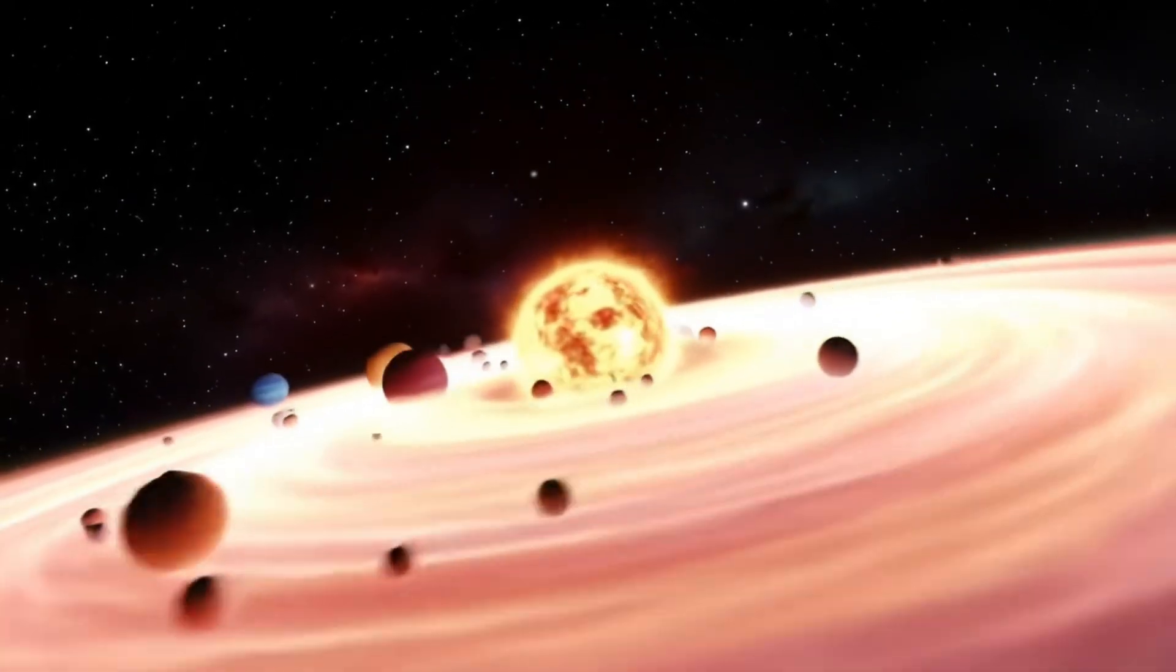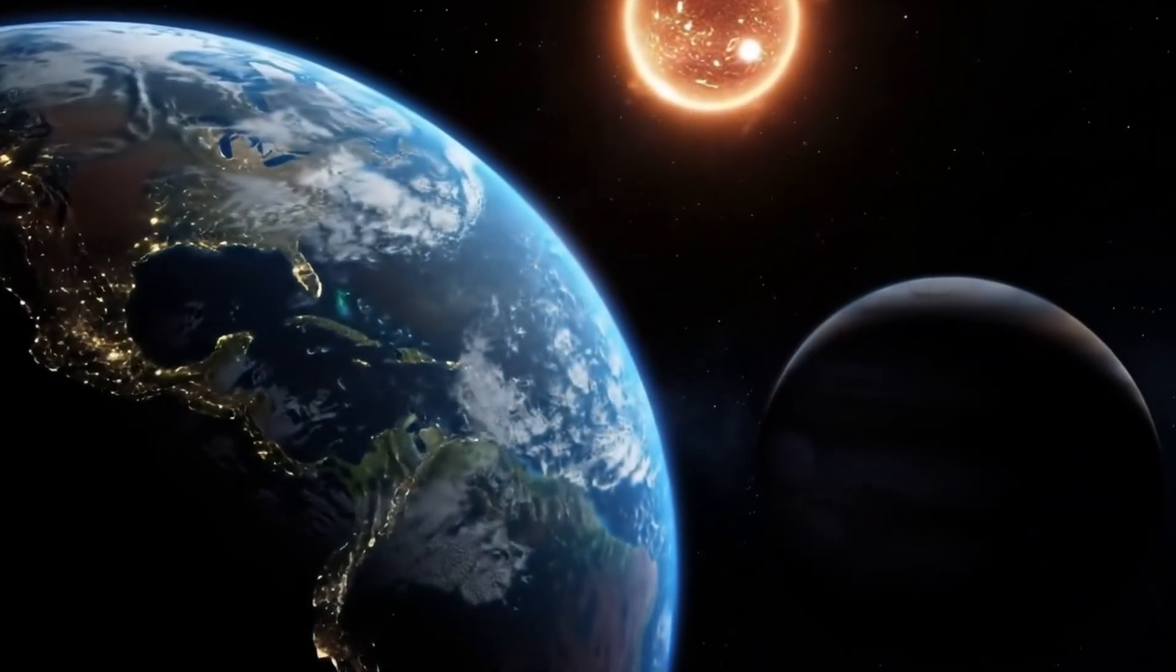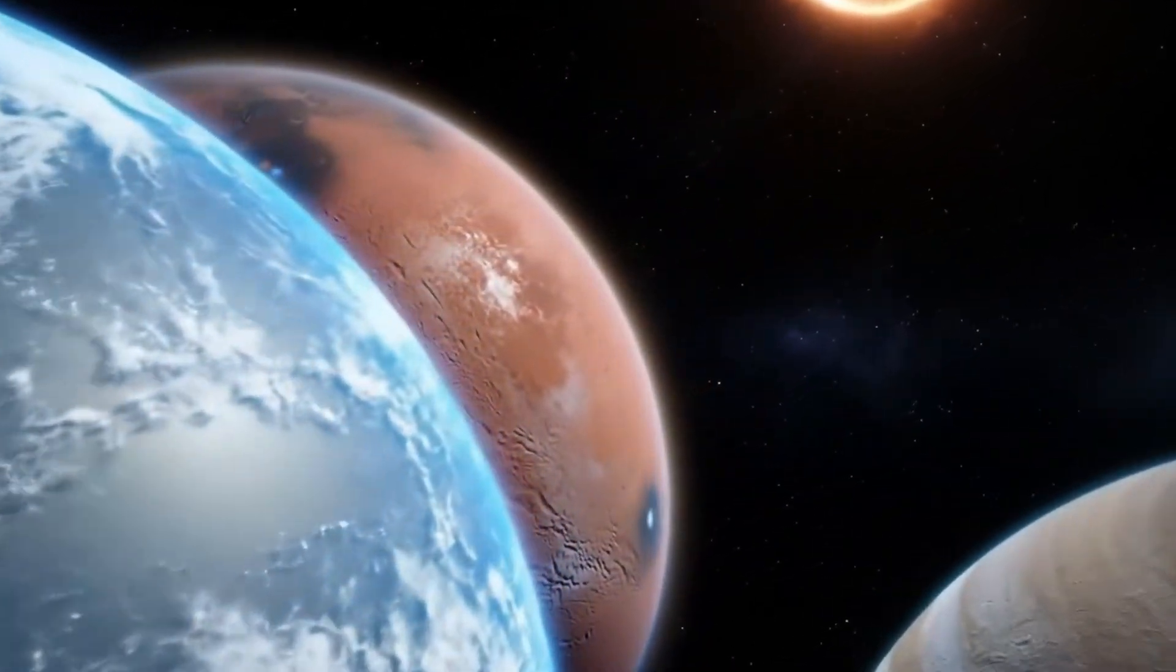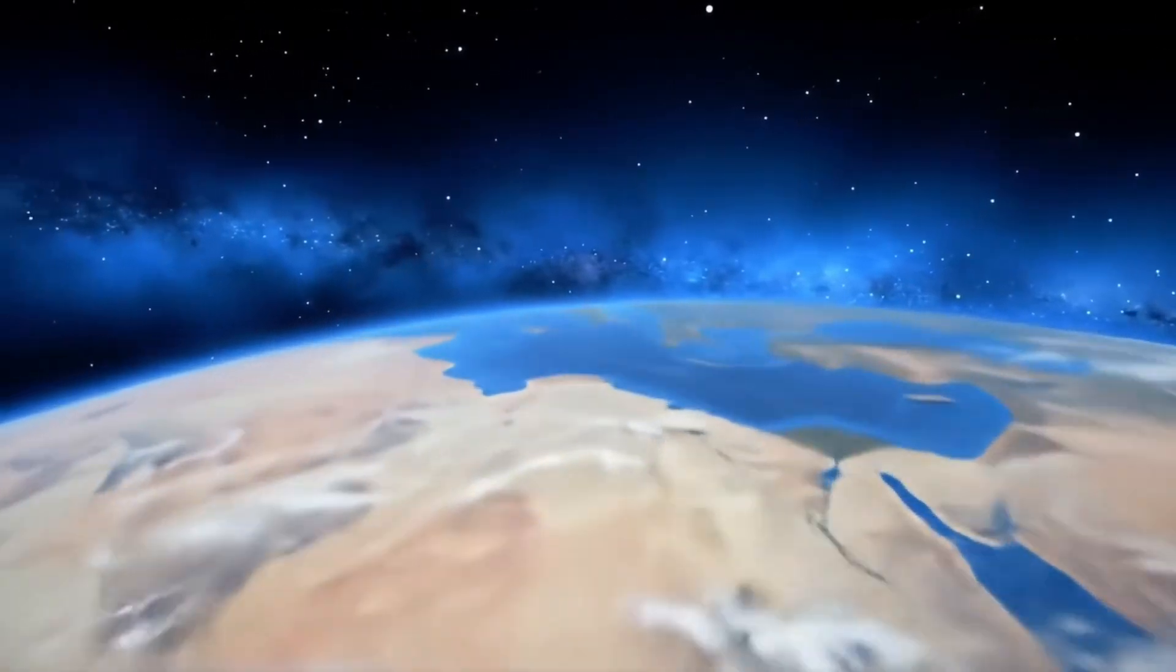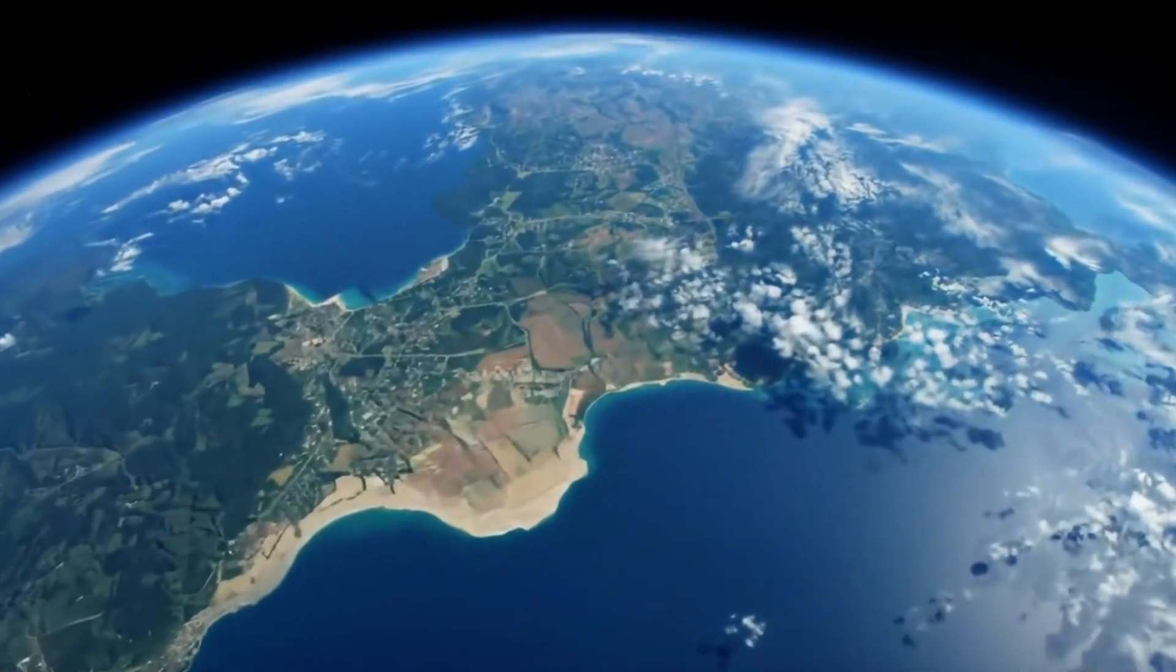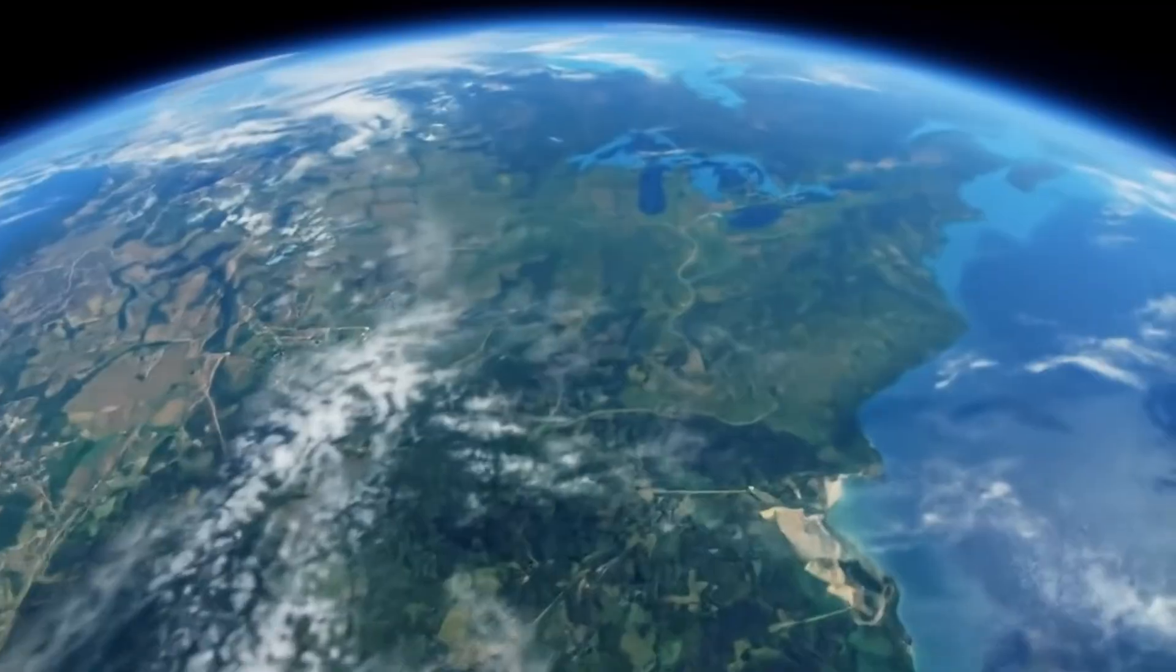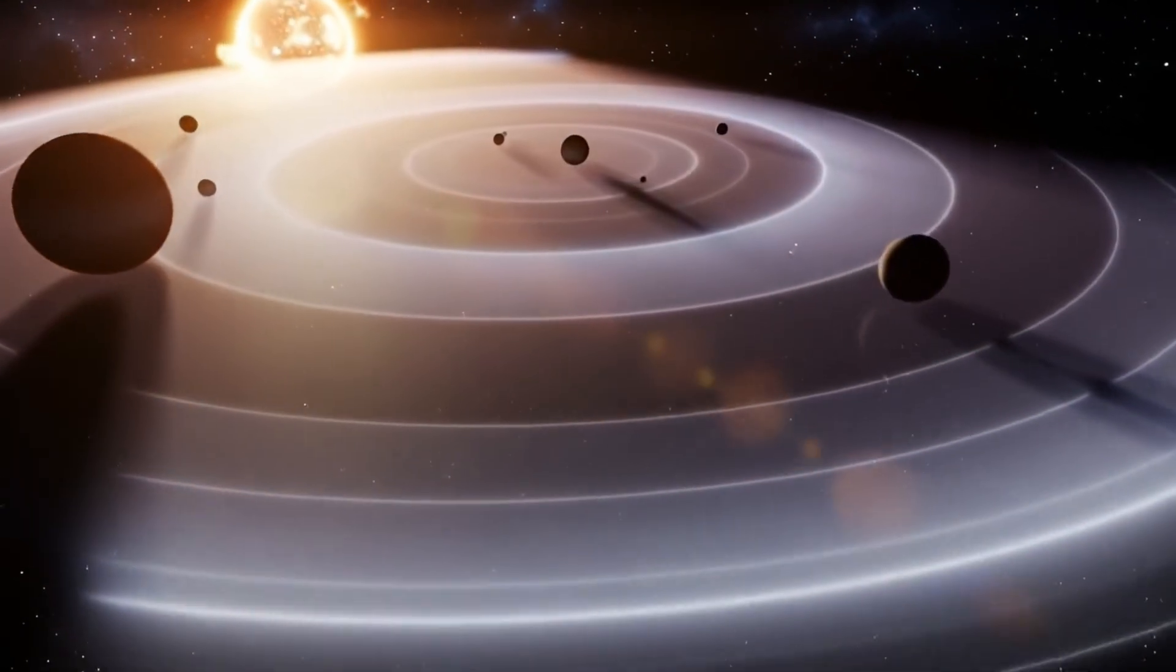But here's the thing. Above and below the solar system don't mean the same thing as up and down on Earth. In space, there's no universal up because there's no fixed point to compare to. When we talk about what's above or below the solar system, we're using the ecliptic plane as our reference. Picture it like a table, and we're looking at what's stacked above it and what's tucked underneath.